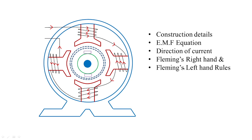We have seen the EMF equation, the direction of the current, Fleming's right hand rule, and Fleming's left hand rule. Also, the EMF generated in the machine is given by φPNZ/60A, where P is the number of poles, N is the speed, Z is the number of conductors, and A is the number of parallel paths.